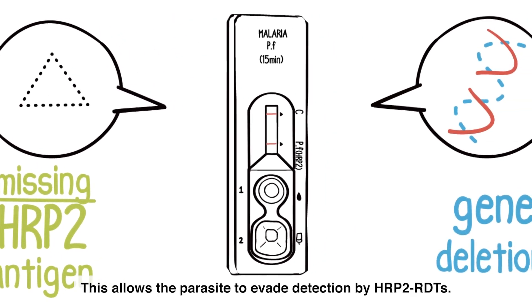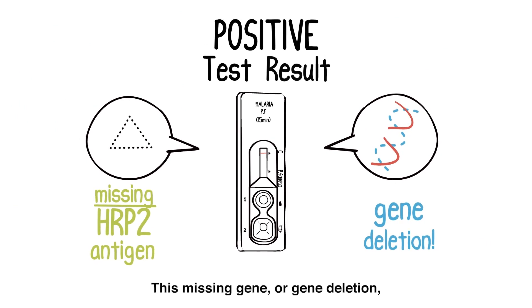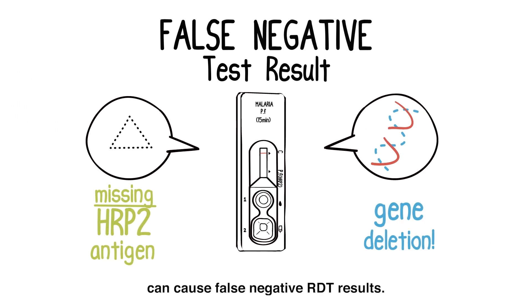This allows the parasites to evade detection by HRP2 RDTs. This missing gene, or gene deletion, can cause false negative RDT results.